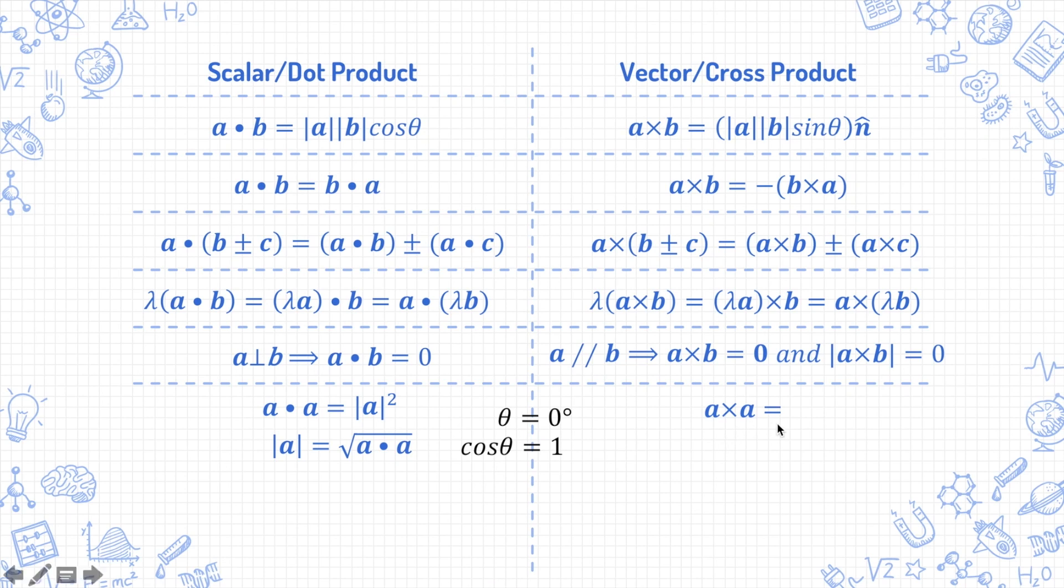And if you take a cross a, a is parallel to itself. So, a cross a is equal to the zero vector or mod of a cross a equals to the number 0.